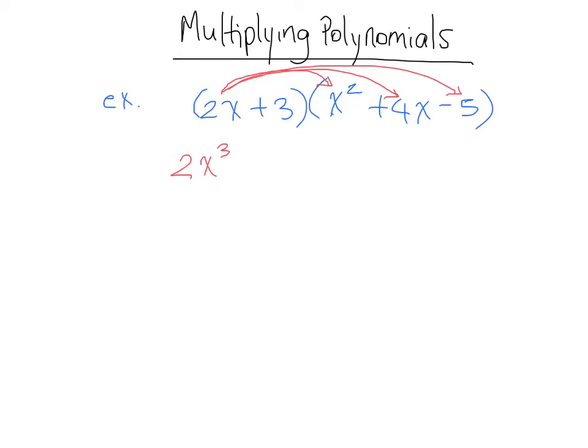Plus 2x times 4x gives us plus 8x squared. And finally, for the red part that we just gave the arrows to, we have 2x times negative 5 which gives us negative 10x.